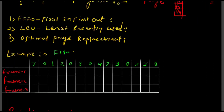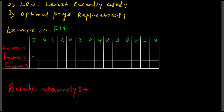The first required page is 7. Initially, main memory is free, so all frames are empty. We load page 7 into the first frame. There are two events that occur when a page is required: page fault and page hit. Page fault means the required page was not already present in memory, so we must load it from secondary memory to main memory. Since page 7 was not present, a page fault occurs.